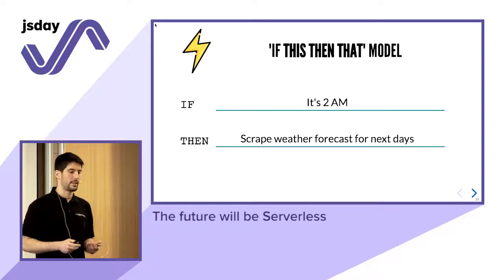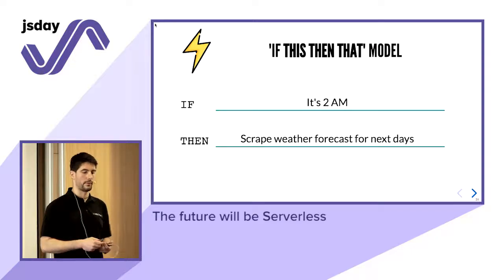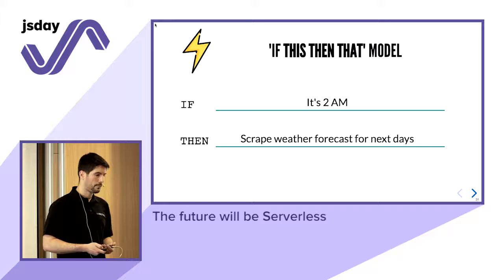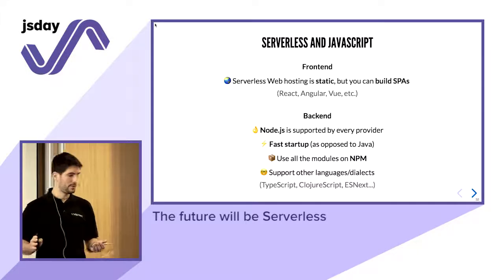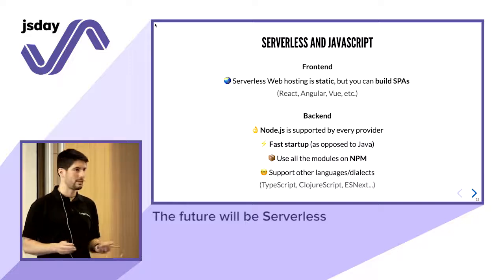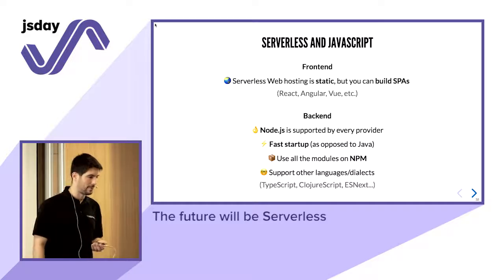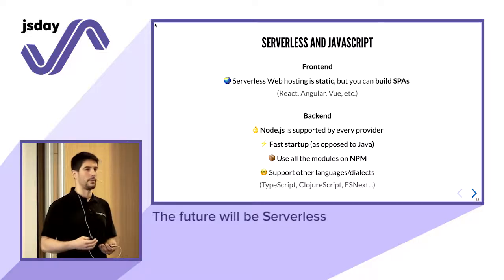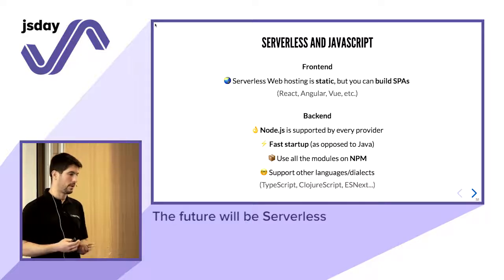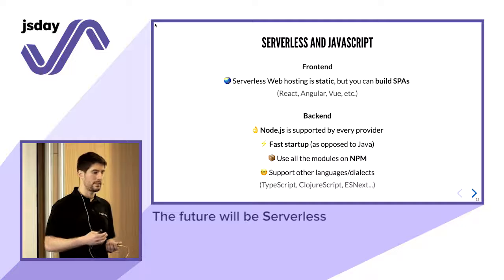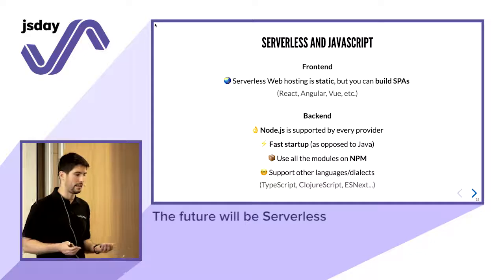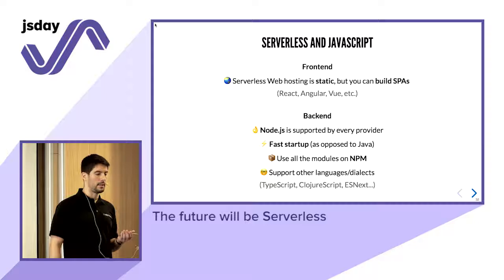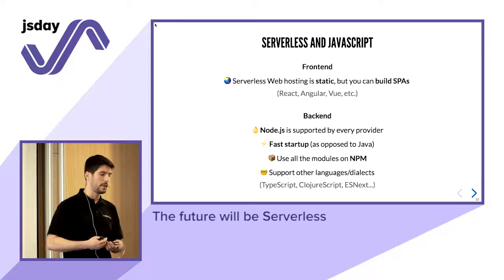An example: if a new CSV file is saved in object storage, trigger a Lambda that processes it and saves the records to a database. Or if there is an HTTP request to API Gateway for 'get products,' trigger a Lambda that implements the products API and retrieves them from a database as JSON. You can also have scheduled events, like: if it's 2am, scrape the weather forecast and do something with it. And since this is a JavaScript conference — JavaScript is probably one of the preferred languages for serverless, supported by every cloud provider.